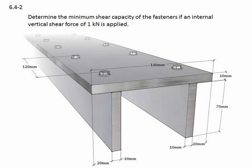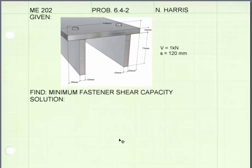Problem 6.4-2: Determine the minimum shear capacity of the fasteners if an internal vertical shear force of one kilonewton is applied. Here we have a built-up member with dimensions given, and there are fasteners connecting the top plate to the two vertical members. We are asked to find the minimum capacity of the fasteners. I'm going to be using the shear flow formula and the fastener spacing formula to solve this problem.